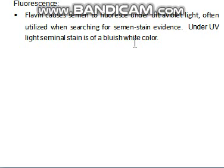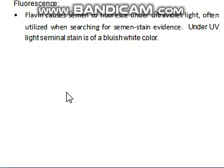Based upon this fluorescence, you would be able to determine whether a given stain or area contains semen. To locate the presence of semen in a suspected area, you can use UV light — simply impinge the UV light on the suspected area and fluorescence will occur due to the presence of flavin. This is a solely presumptive test.